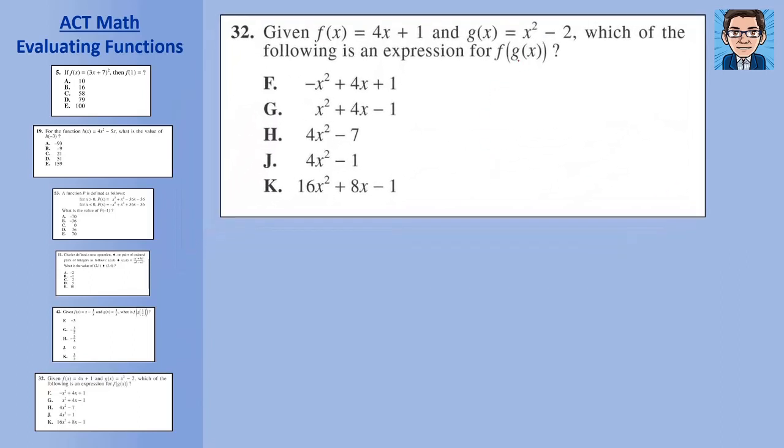For our final problem, we have a composite function, but we don't have a number going in—we have the whole function going in. g of x can be replaced with x squared minus 2. So this becomes f of x squared minus 2. We replace g of x with x squared minus 2, and then we put that into this function. f of x squared minus 2 is 4 times (x squared minus 2). Put it in parentheses so we know we're multiplying 4 by the x squared and by the negative 2. Four times x squared gets us 4x squared. Four times negative 2 gets us negative 8, plus 1. Combine like terms and we get 4x squared minus 7, which is answer H.